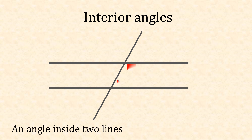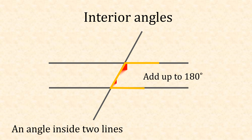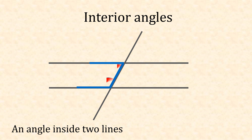For interior angles, these are inside the two lines and they add up to 180. If we draw a U around these angles, you can see they fit nicely, and if you add them up it makes 180. If you flip that U and place it elsewhere between the two lines, your angles would also add up to 180.